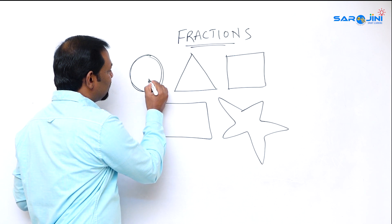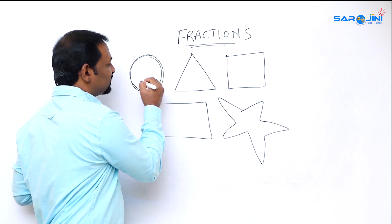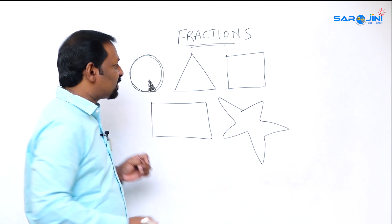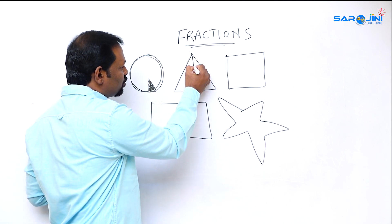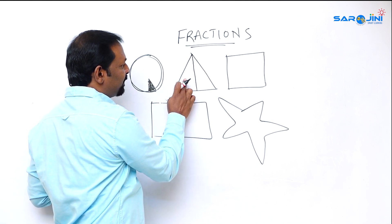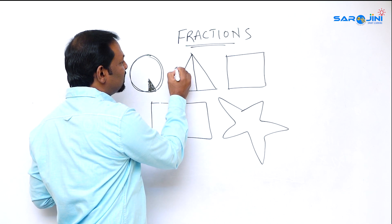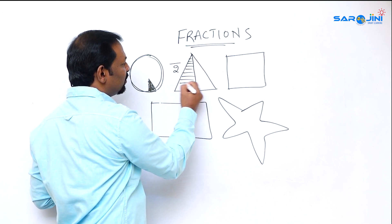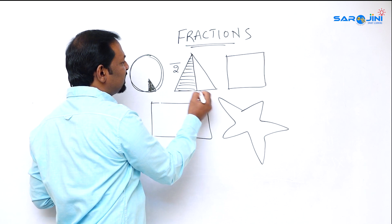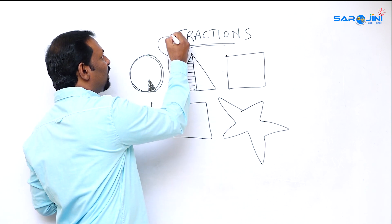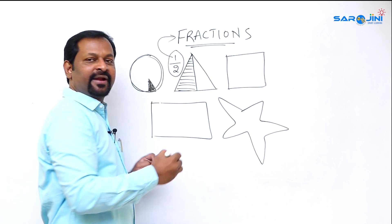That piece is what a fraction is. Suppose I make the cake into two parts — one part, two parts, total two parts. If I shade one part, then one out of two, which is one by two, is called a fraction.